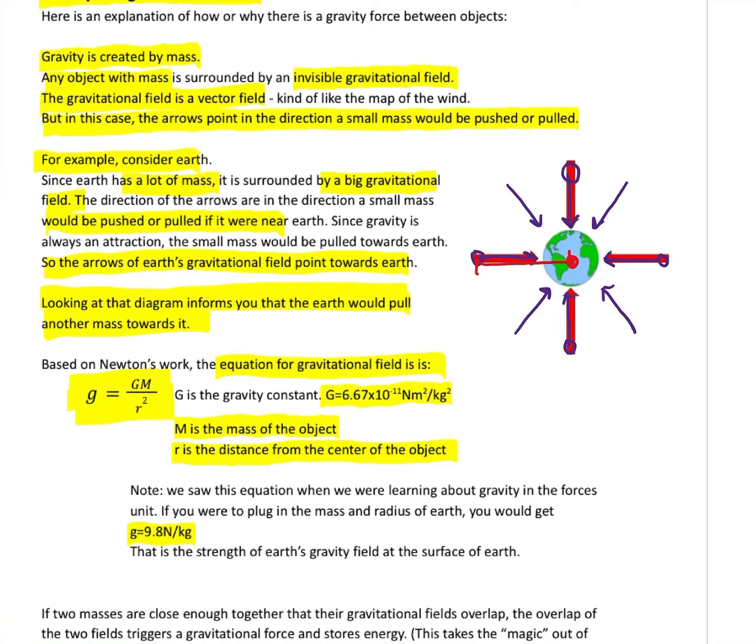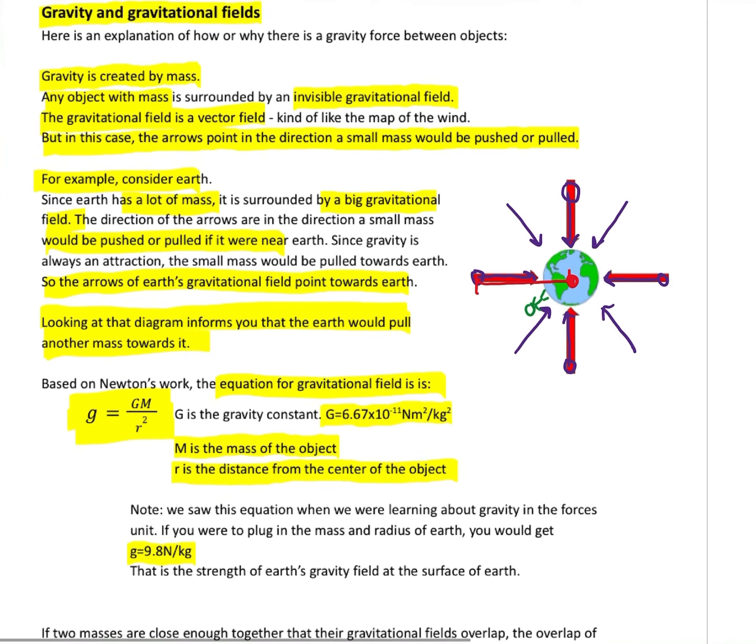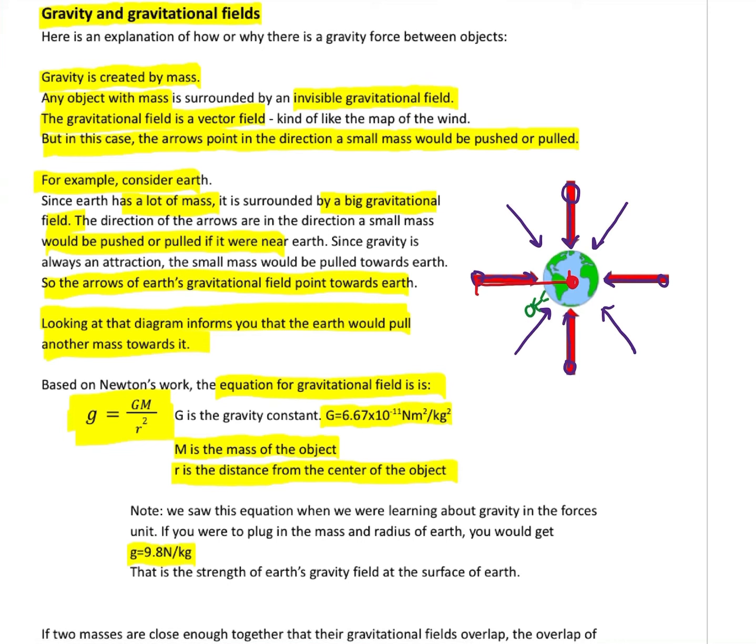The 9.8 is an answer to the gravitational field strength of Earth when we're on Earth. So it's really telling us how strong this vector field is if we were standing on Earth. So if you're standing here, the gravity on us would be 9.8 newtons for every kilogram we have. That's what the gravitational field is. It's this invisible field triggered by the existence of mass. Anything with mass is going to be surrounded by this invisible field.